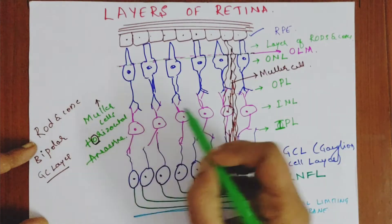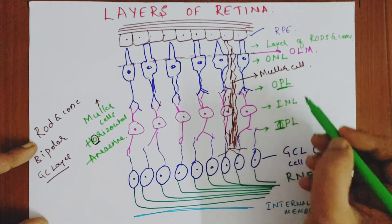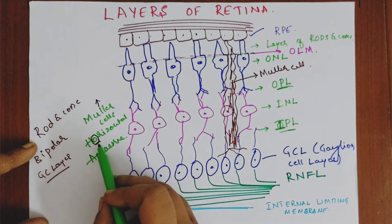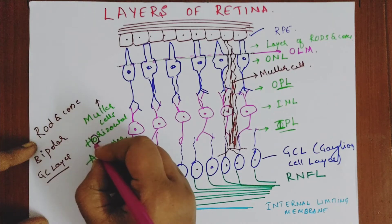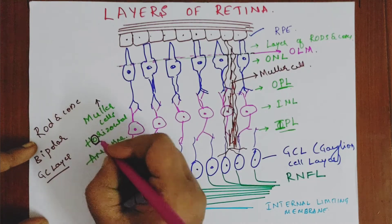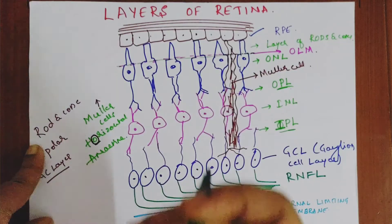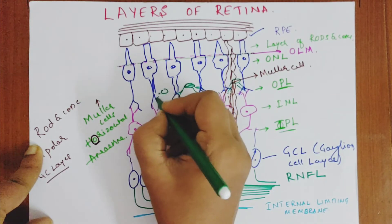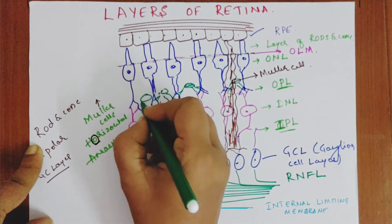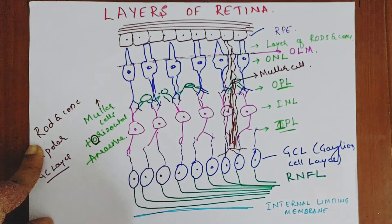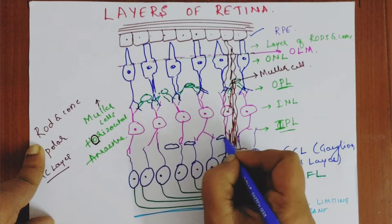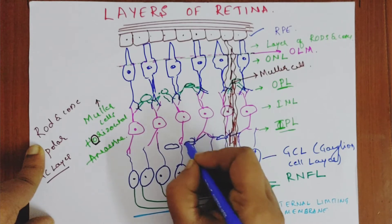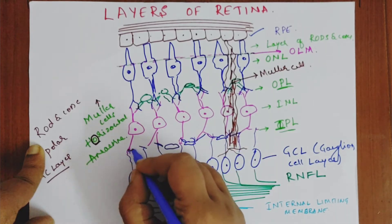The horizontal and amacrine cells are present in the plexiform layers, where the synaptic ends of the cells meet. The horizontal cell is present in the outer plexiform layer — just remember the 'O' in horizontal for outer plexiform layer. The amacrine cells are also in a plexiform layer — specifically the inner plexiform layer.